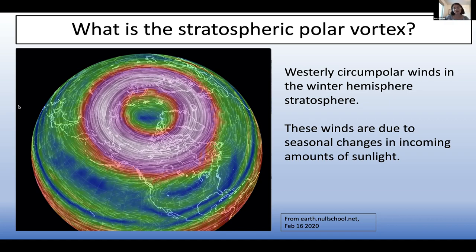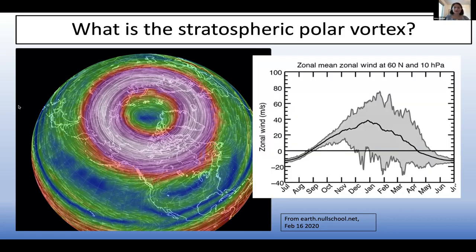The polar vortex describes the westerly circumpolar winds in the winter hemisphere. These winds are due to seasonal changes in incoming amounts of sunlight — as sunlight leaves the polar cap in fall, you lose radiative heating by the ozone layer in the stratosphere, increasing the temperature gradient from pole to equator, which drives by thermal wind balance these westerly winds in both hemispheres. A typical metric of the stratospheric polar vortex is the zonal mean zonal winds at 60 degrees and 10 hectopascals, showing the daily climatology in the JRA-55 reanalysis from 1958 to 2018.